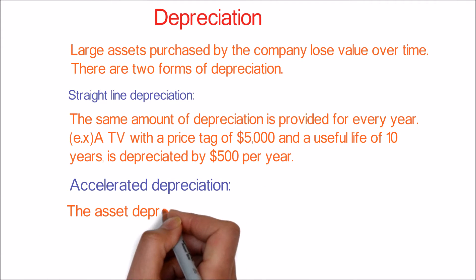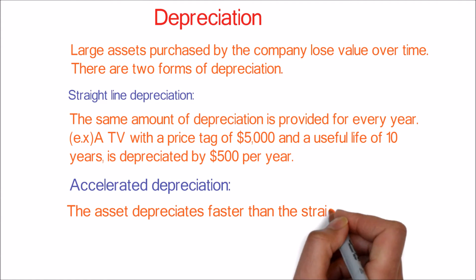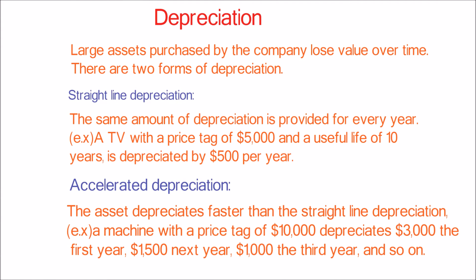Accelerated depreciation: the asset depreciates faster than the straight-line depreciation. For example, a machine with a price tag of $10,000 depreciates $3,000 the first year, $1,500 the next year, $1,000 the third year, and so on.